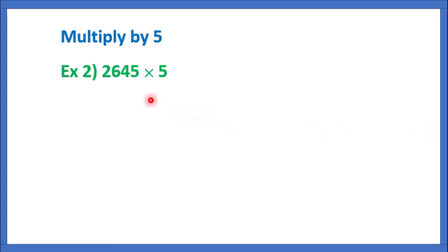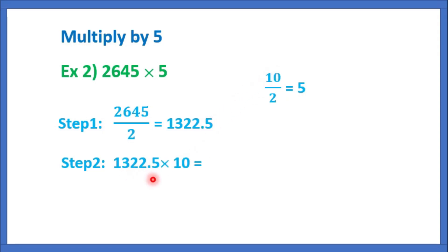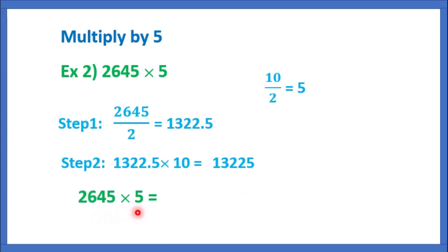Example 2: 2645 into 5. Step 1: 2645 by 2 is equal to 1322.5. Step 2: now, multiply by 10. That is equal to 1322.5 into 10. We should move the decimal point here. So, the answer will be 13,225. So, 2645 into 5 is equal to 13,225.